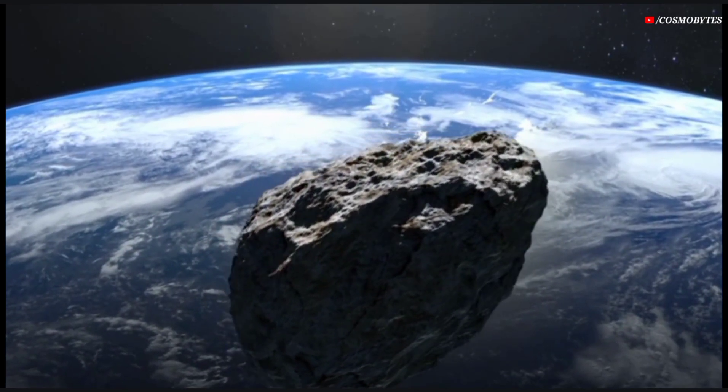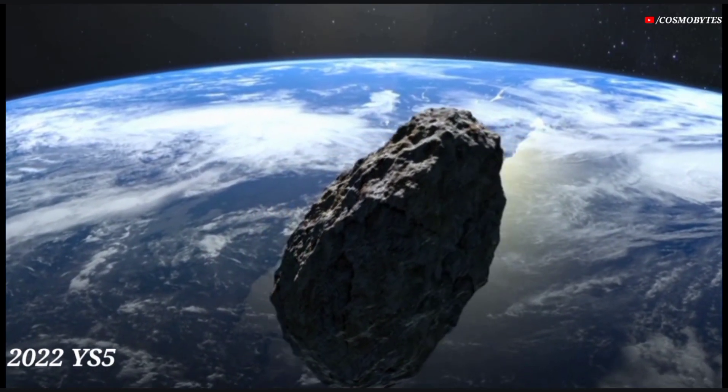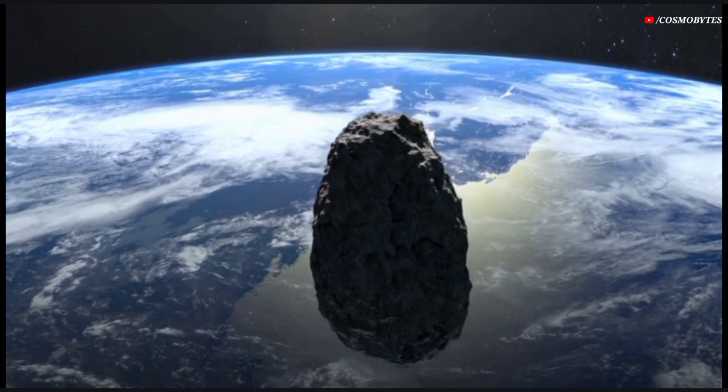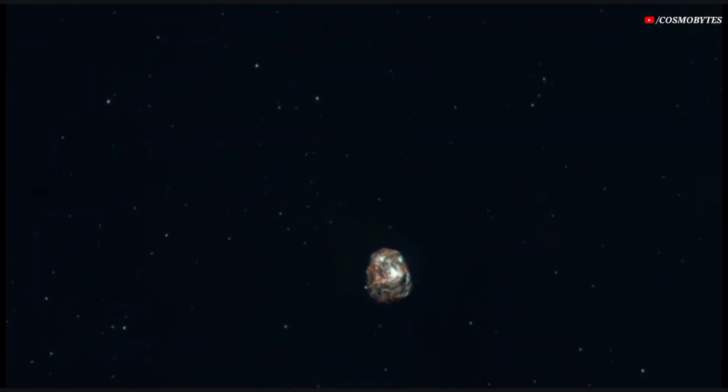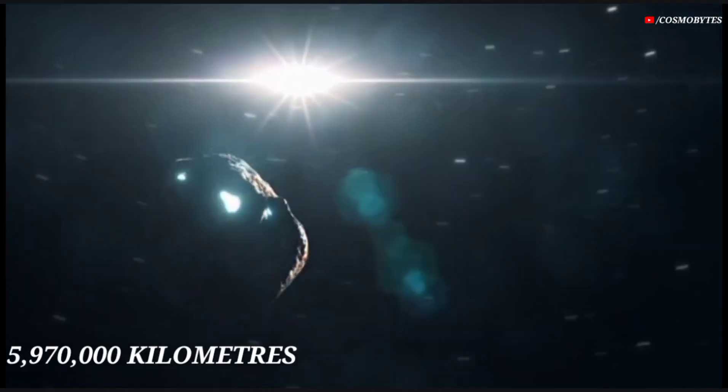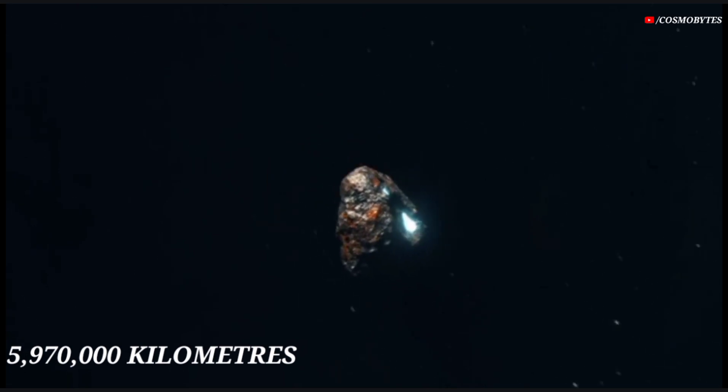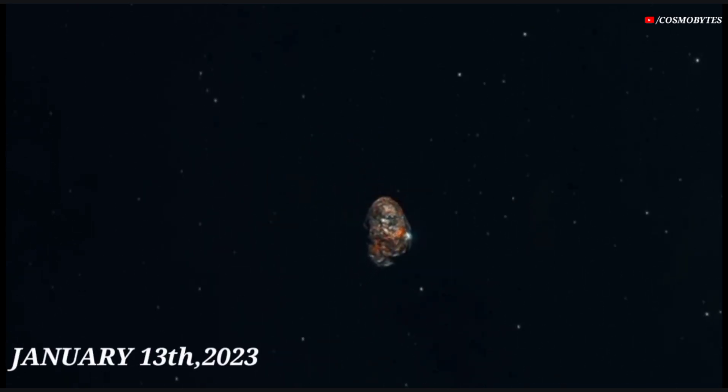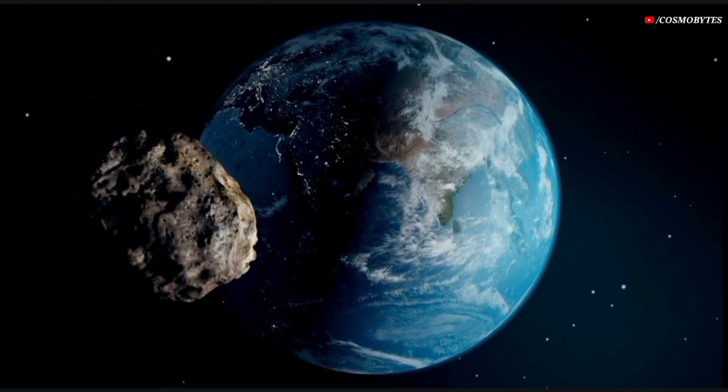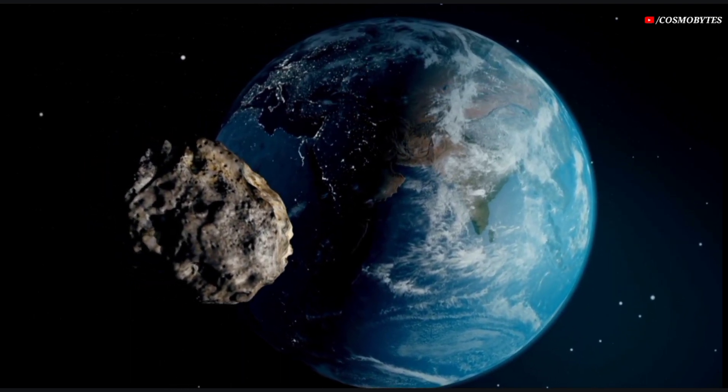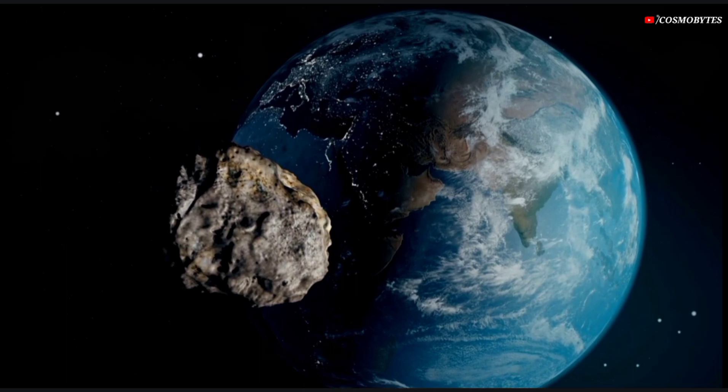Fourth asteroid is asteroid 2022 YS5. The size of this asteroid is approximately 130 feet. Asteroid 2022 YS5 will also be nearing Earth at a closest distance of 5,970,000 kilometers on January 13, 2023. The asteroid will be zooming towards the planet at a speed of 21,528 kilometers per hour.